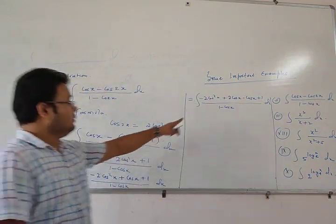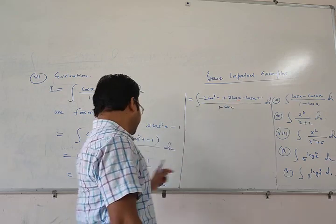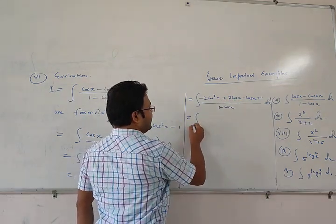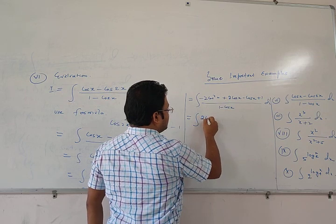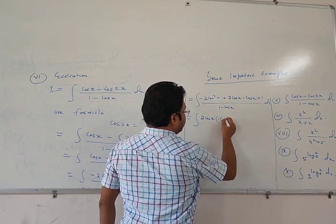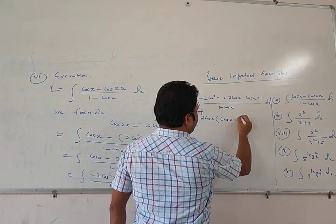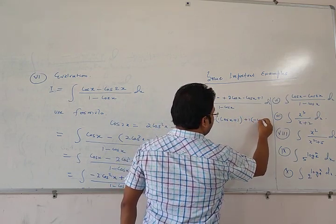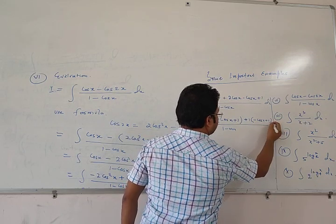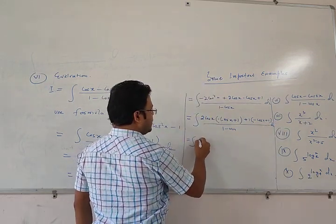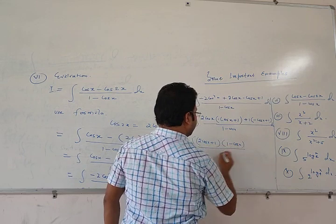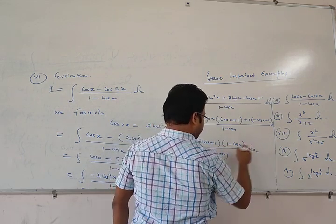This equation becomes integration of (-2 cos² x + 2 cos x + 1)/(1 - cos x) dx. You can factor the first two terms: take 2 cos x common to get 2 cos x(-cos x + 1) + 1, which equals (2 cos x + 1)(1 - cos x)/(1 - cos x) dx.